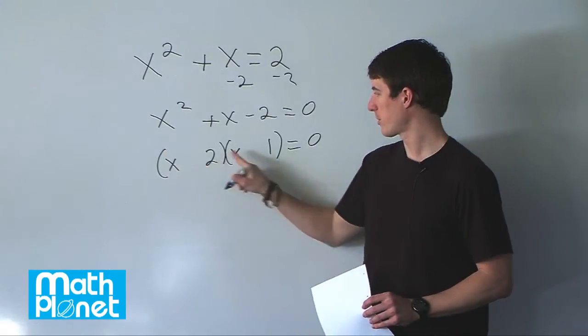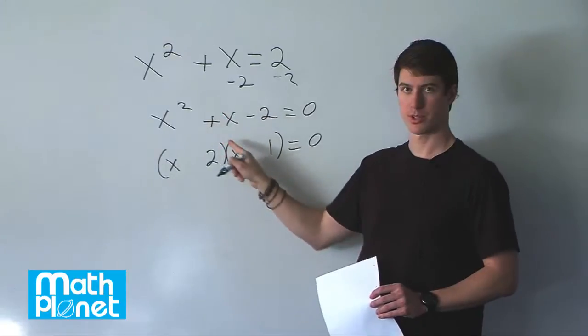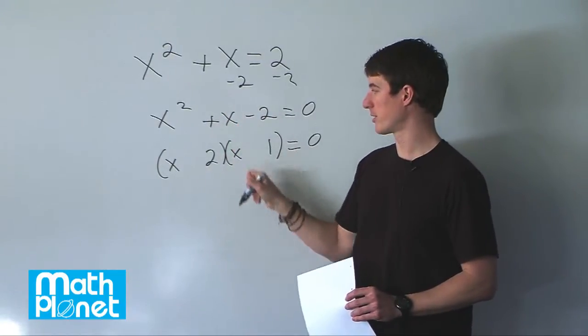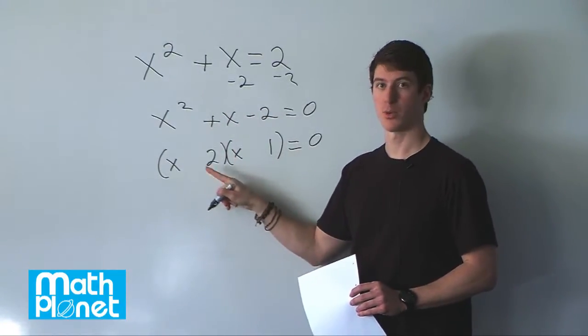Now we need to figure out which one is going to be negative. We look at the cross term to determine that. The cross term is positive, so the larger number will have to be positive.